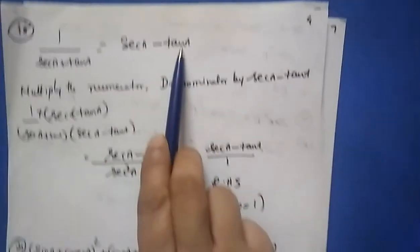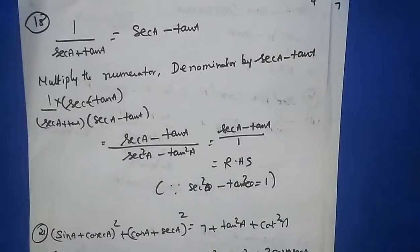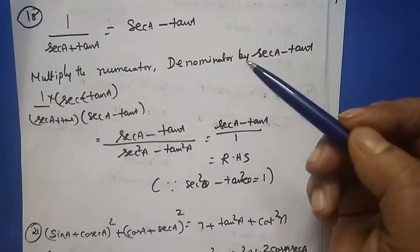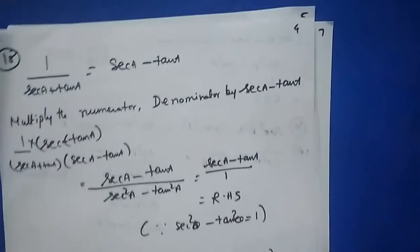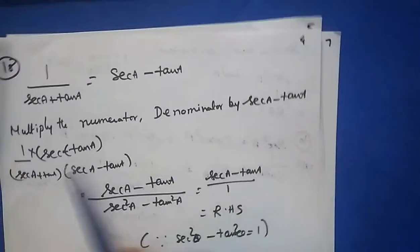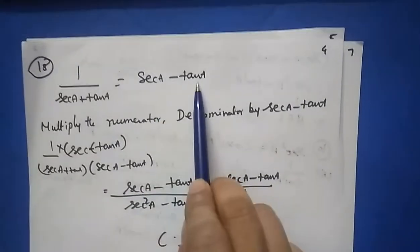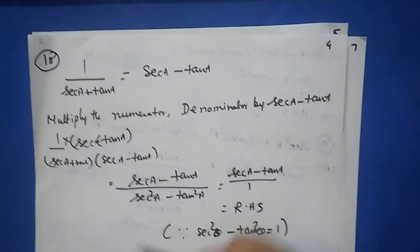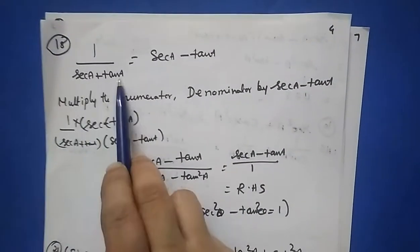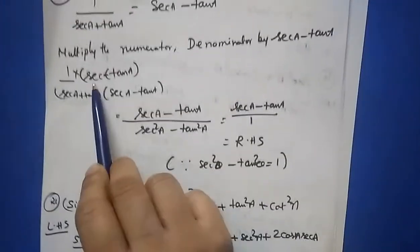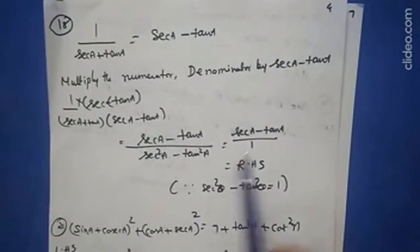Question 18: 1/(sec a + tan a) = sec a − tan a. Do not cross multiply here because you must derive the left hand side to equal the right hand side. Multiply numerator and denominator by (sec a − tan a); the value does not change. You get (sec a − tan a)/(sec²a − tan²a). Since sec²a − tan²a = 1, you get sec a − tan a, which is the right hand side.